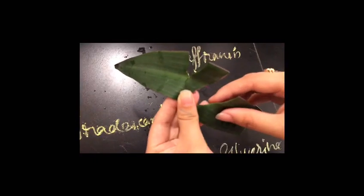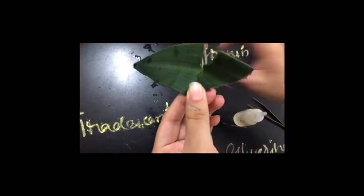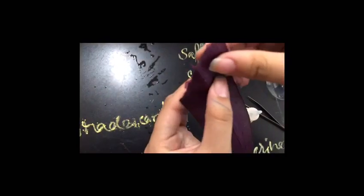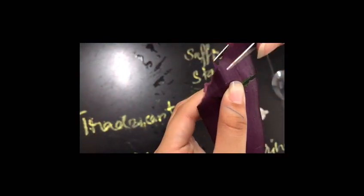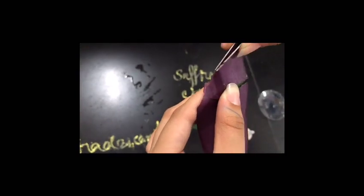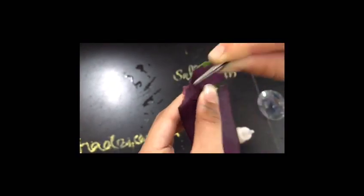To prepare the slide, we need to start off by tearing the leaf in such a manner that we can peel out the lower epidermis of the leaf. It can be peeled out by using a forceps or a blade. Then we keep it on our watch glass to stain it.